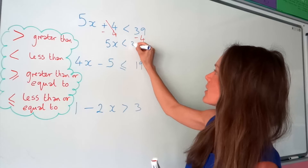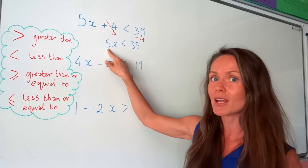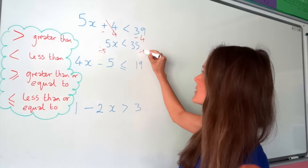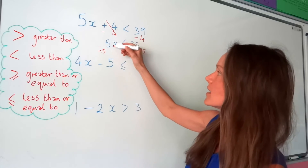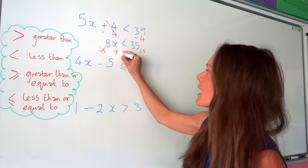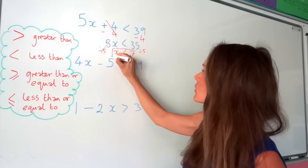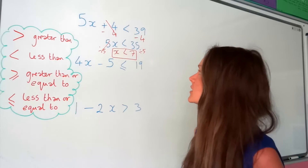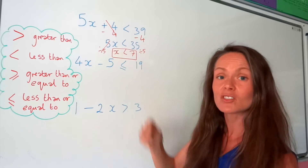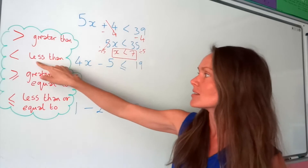39 minus 4 gives me 35. Now I need to get rid of the 5 — the opposite of multiplying by 5 is to divide by 5. Remember to do the same thing on both sides of the inequality. 5 divided by 5 leaves 1x, and 35 divided by 5 is 7. We've solved the inequality — just like solving a linear equation. This means x is less than 7.